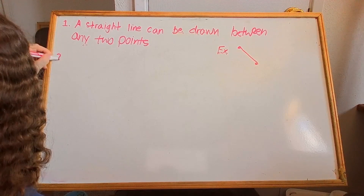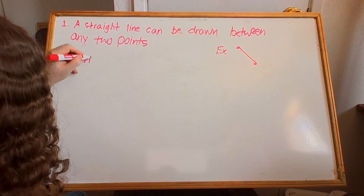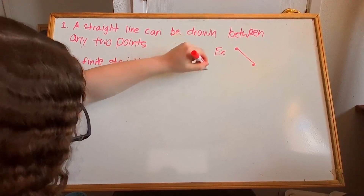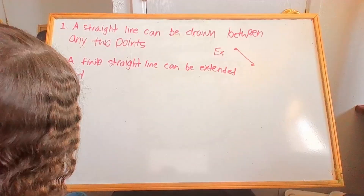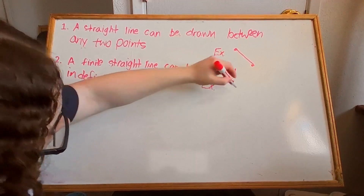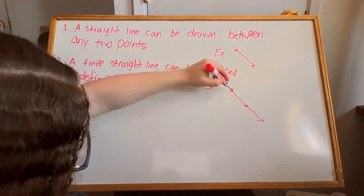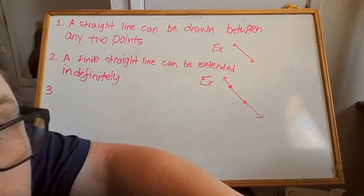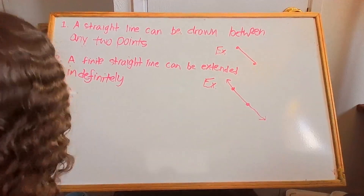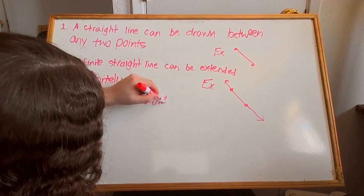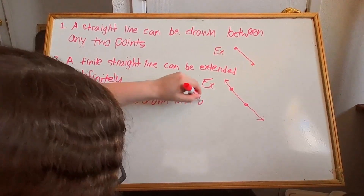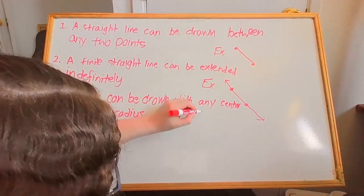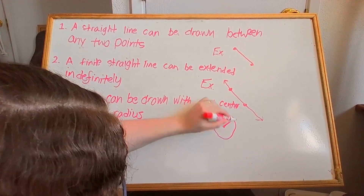The second axiom is: a finite straight line can be extended indefinitely. This tells us that lines don't have natural boundaries — if you have a segment, you can always continue it forward or backward to form an infinitely long line. The third axiom is: a circle can be drawn with any center and any radius. This assumes that distance is well defined. Given a point — the center — and a length — the radius — there exists a set of all points that are that fixed distance away: a circle.